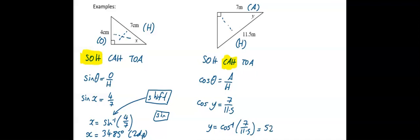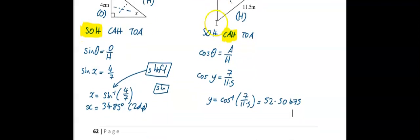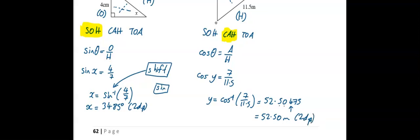The result is 52.50475. Going to two decimal places: the first decimal place is five, the second is zero, and the check figure is four — so we don't round up. The answer is 52.50 degrees to two decimal places.